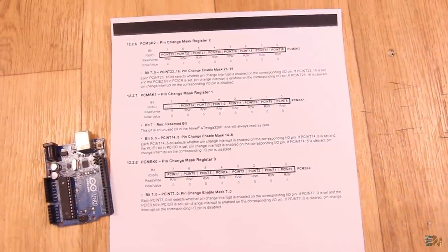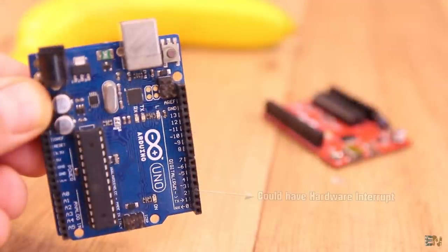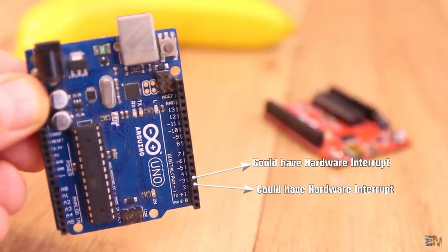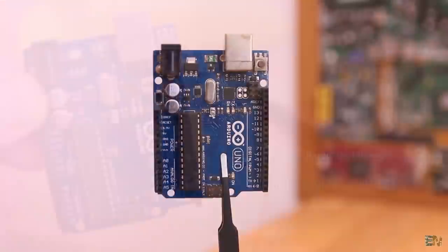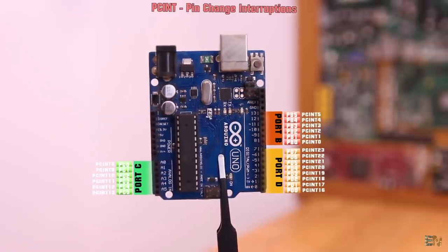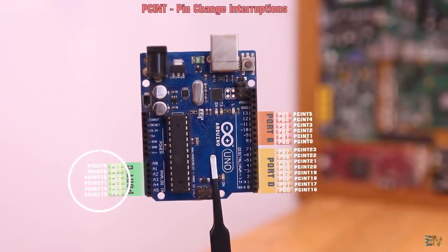Now the hardware interruptions are very limited. For example, on the Arduino Uno, only pins 2 and 3 could trigger a hardware interruption. But on the other hand, the PCINT interruptions don't act over just one pin, but over a group of pins, better known as a port.